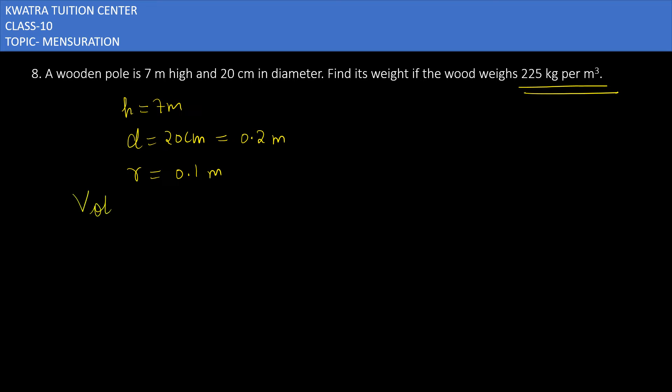Then you have to find the volume, then only you will be able to find the weight of it. So volume of pole—the pole is a cylinder, so it will be πr²h. So π will be 22/7, r will be 0.1 × 0.1, and then h will be 7. The 7 and 7 can be cancelled.